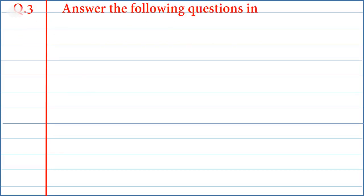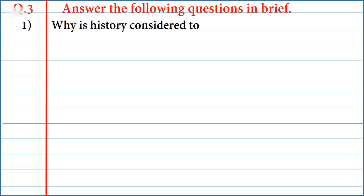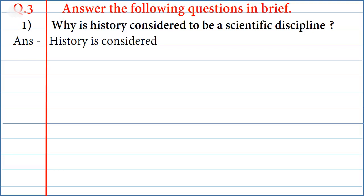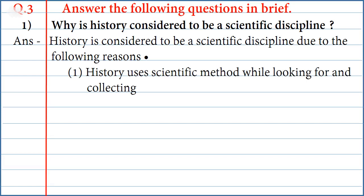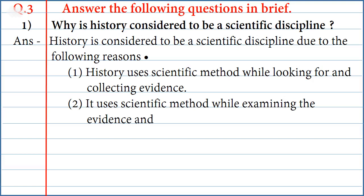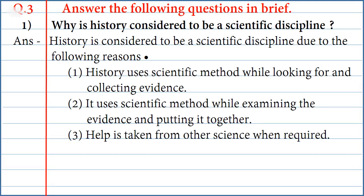Question 3 — Answer the following questions in brief: First, why is history considered to be a scientific discipline? Answer: History is considered to be a scientific discipline due to the following reasons: first, history uses the scientific method while looking for and collecting evidence; second, it uses the scientific method while examining the evidence and putting it together; third, help is taken from other sciences when required.